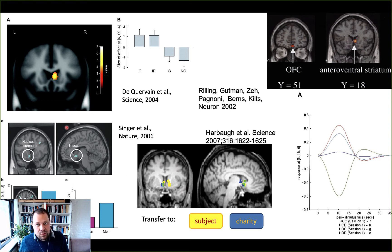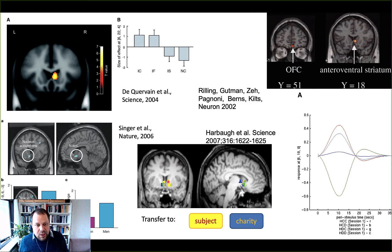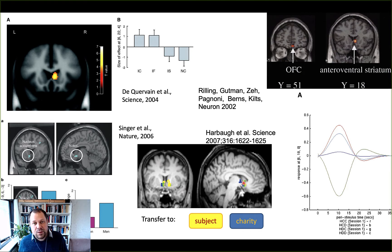However, we're still in the domain of reverse inferences here. Similarly, in a whole other domain, namely charitable giving, transfers to charity are also processed within this domain and actually correlate with the amount that's transferred, just like transfers given to the subject — just receiving monetary outcomes. And that's overlapping in the ventral striatum again. So there are many different tasks within the social domain that activate the reward areas.